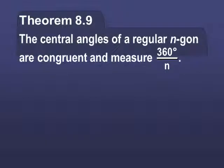Now, the central angles of a regular N-gon, remember, an N-gon means we don't know how many sides it has. N is for number, any number of sides. They are congruent and measure 360 degrees divided by N. N means the number of sides. So, if I have a five-sided figure, I'm going to divide 360 by 5, and so on.